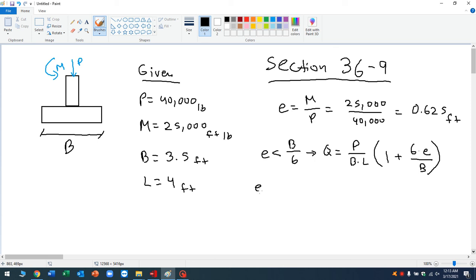Now, what if your eccentricity is greater than B divided by six? Well, in that case, Q, which is the symbol we're using for the bearing pressure, is going to be four times the point load divided by three times the length of the footing. And in parentheses, it's going to be the base minus two times E. So that is going to be your two different scenarios.